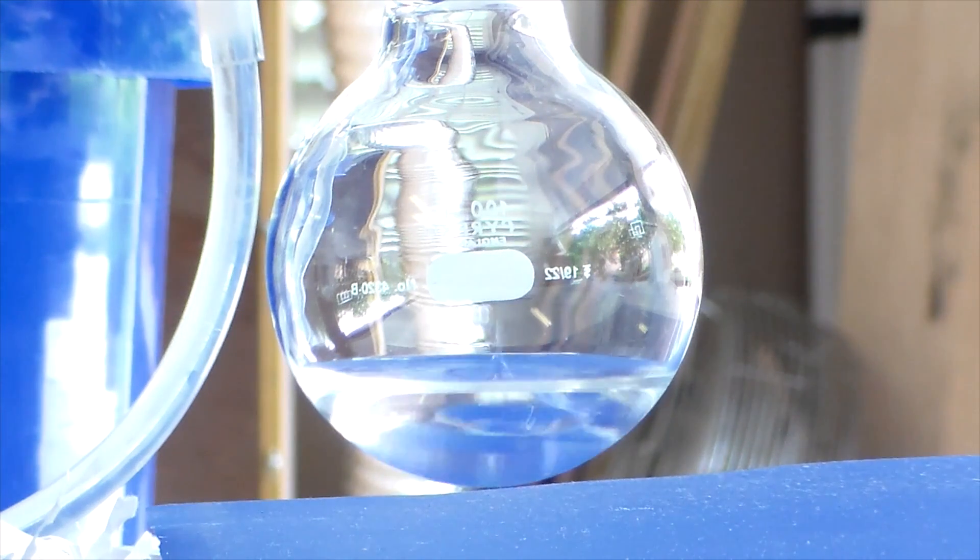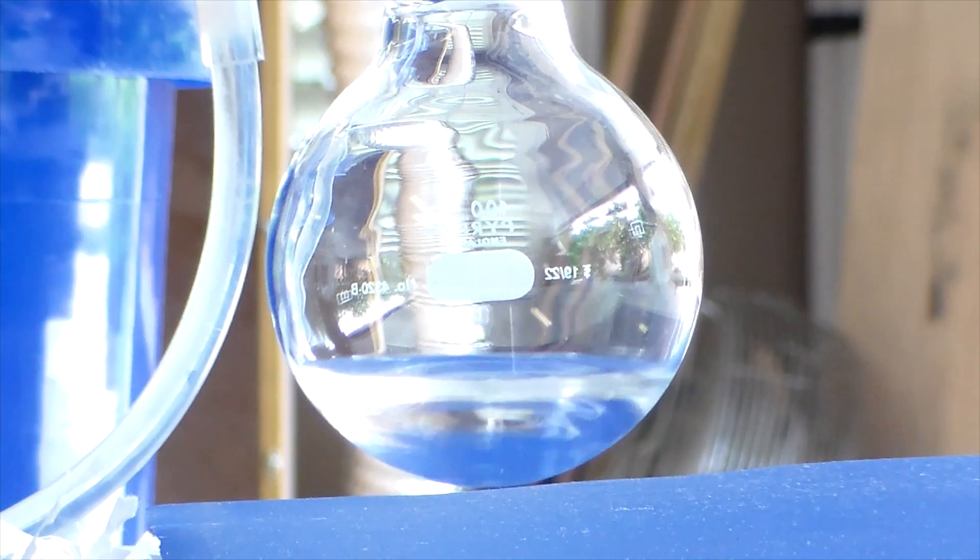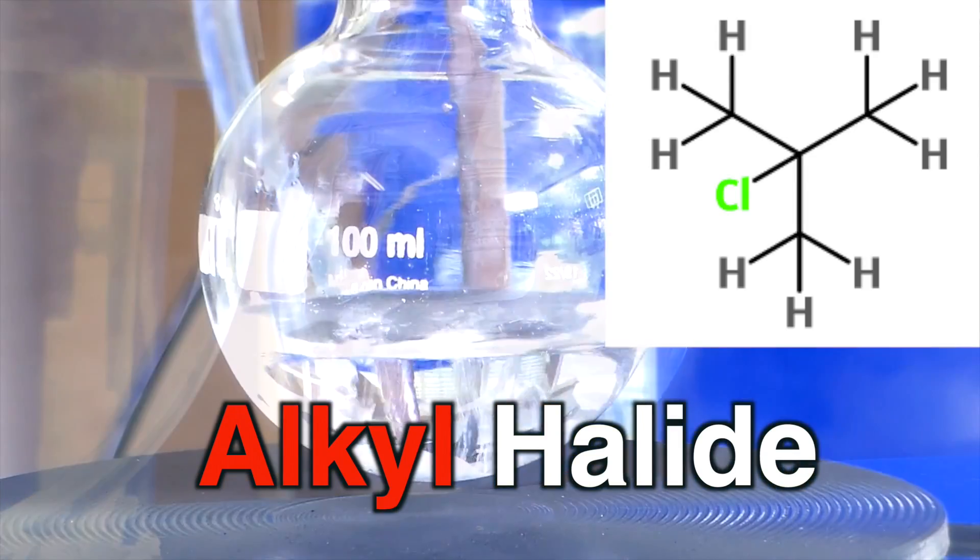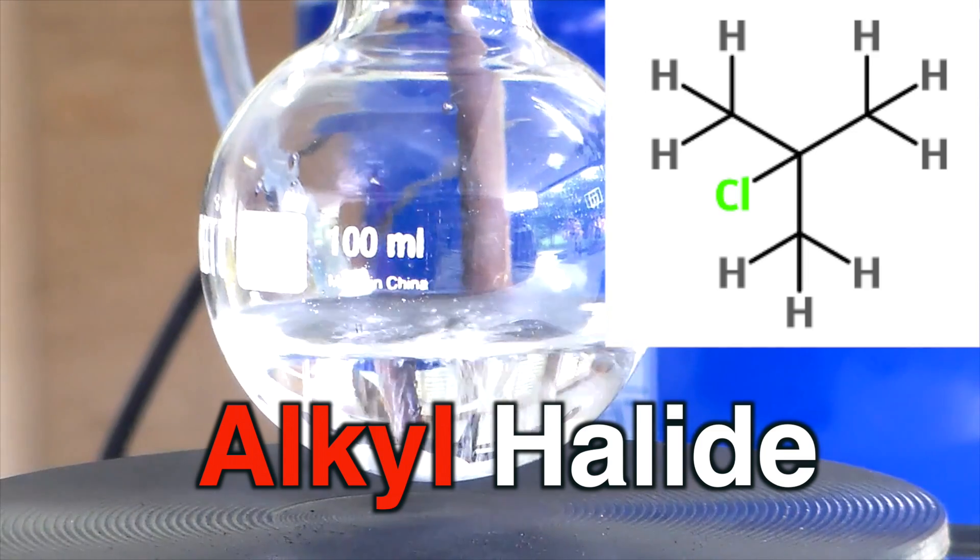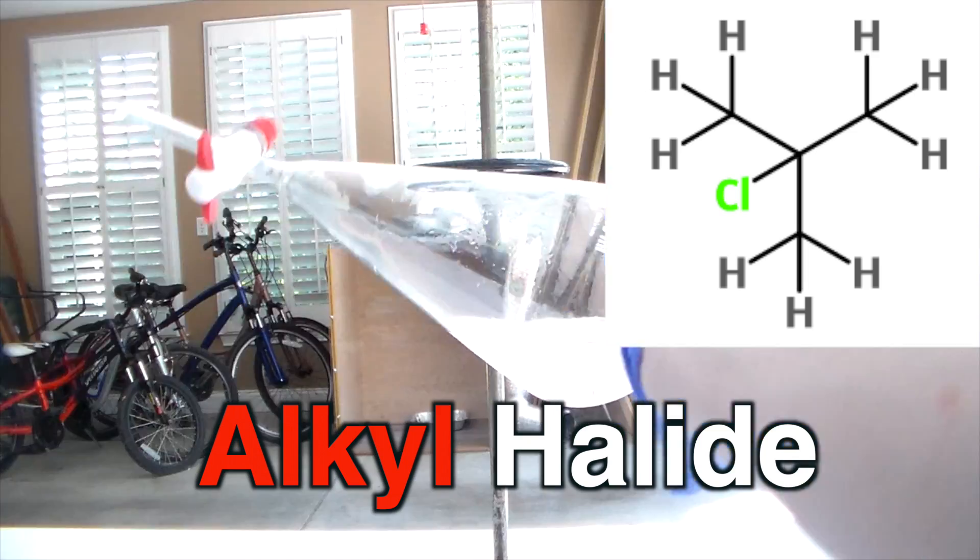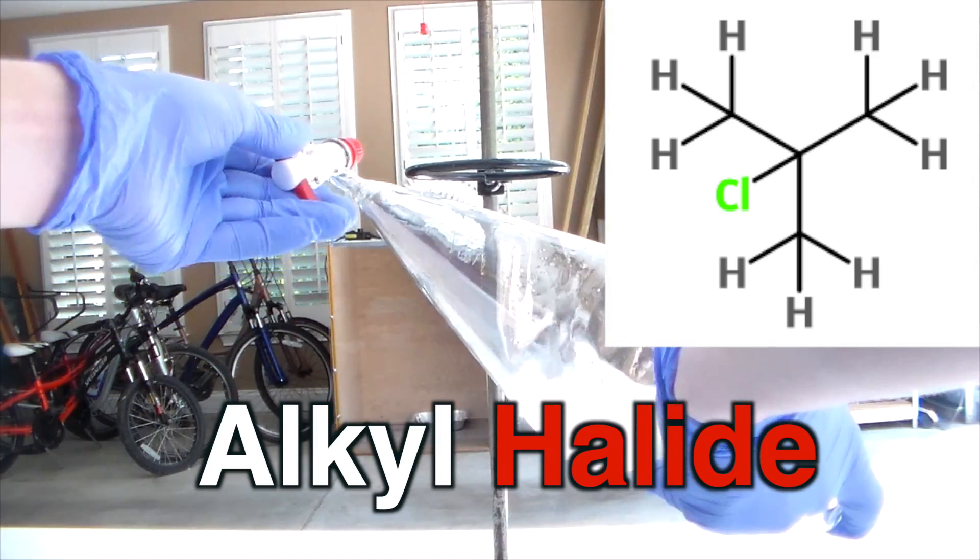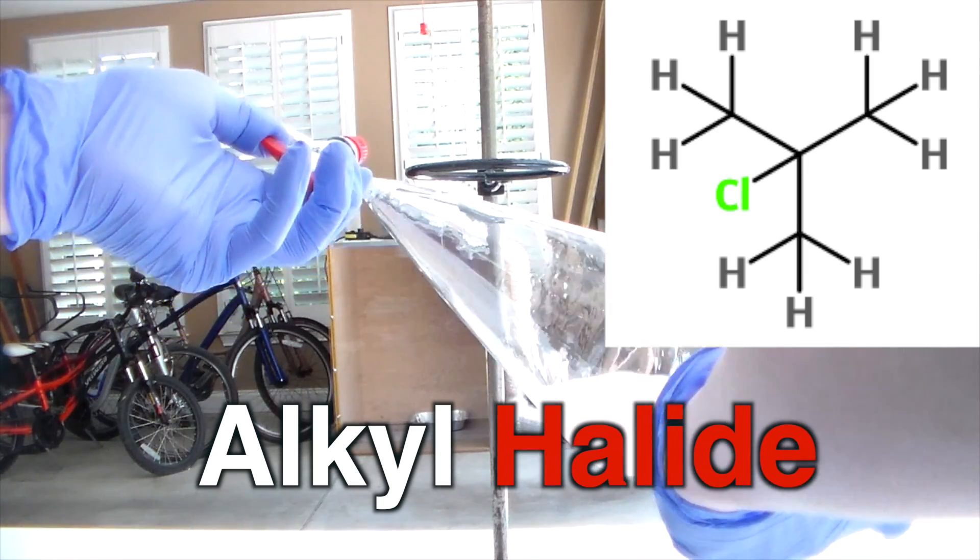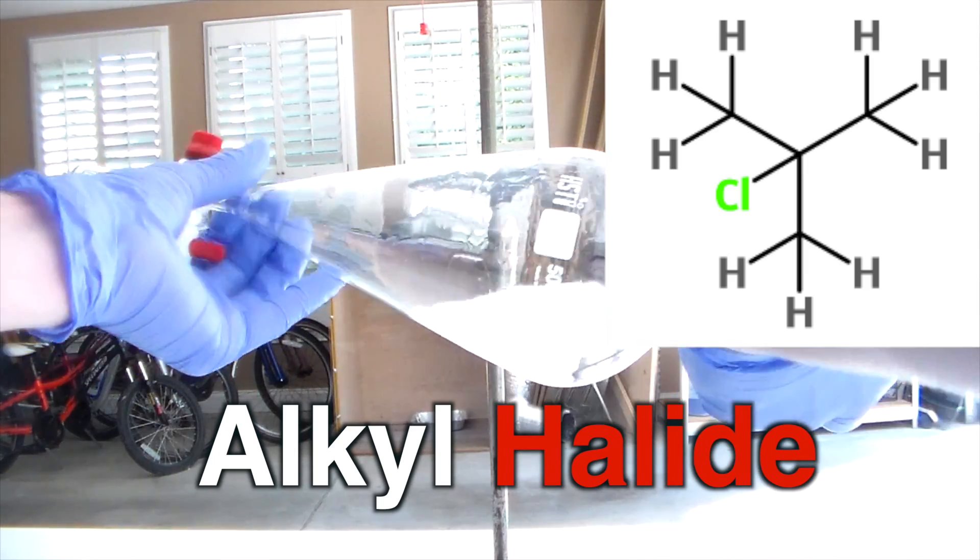Tertiary butyl chloride, also known as tert-butyl chloride for short, is an alkyl halide. The word alkyl means that all the carbon atoms are saturated, meaning they are bonded to four atoms. The word halide means that the molecule contains a carbon-halogen bond. In this case, it's a carbon-chlorine bond.